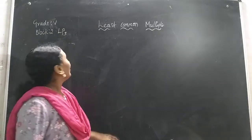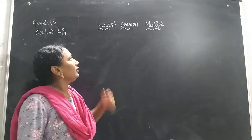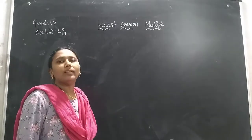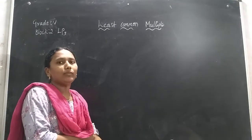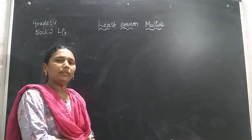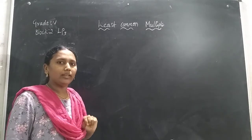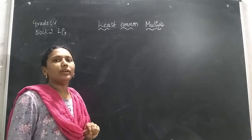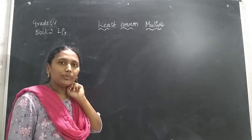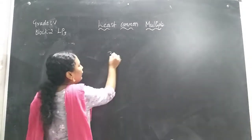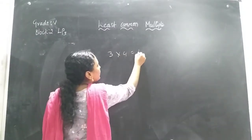Good morning children. Today we are going to see Block 2 LP3: Least Common Multiple. We all know what is a multiple. A multiple is nothing but the product of any two numbers. For example, 3 into 4 is equal to 12.